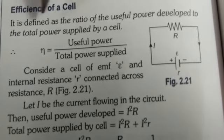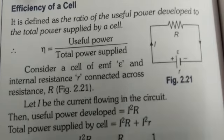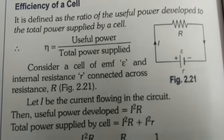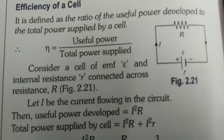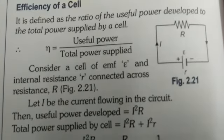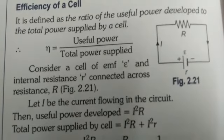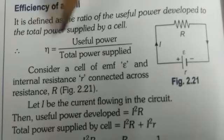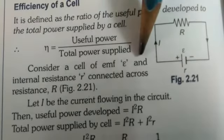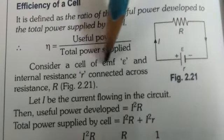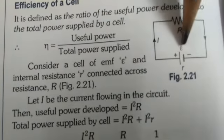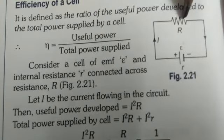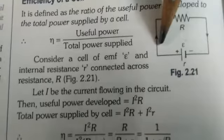It is defined as the ratio of the useful power developed to the total power supplied by a cell. That means whatever power we are giving to cell, out of that, how much power it is utilizing, how much power is useful, that is the efficiency. So here the symbol for efficiency is eta equals to useful power upon total power supplied. Now consider a cell of EMF E, here you can see in diagram.